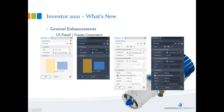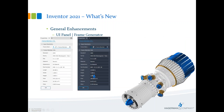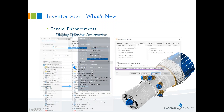Presets for frame commands let you save favorites — for example, quickly switching a frame from 4x4 tube to 2x2 tube, or rectangular to square. Hit the pull-down, select your preset, select the members to swap out, and keep going. The frame member info command was also added to the new panel architecture, allowing you to select one or multiple members and view properties in a table view.